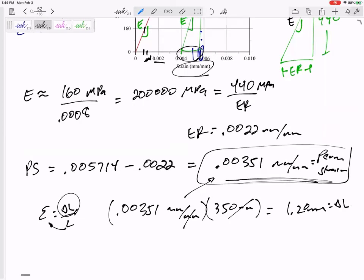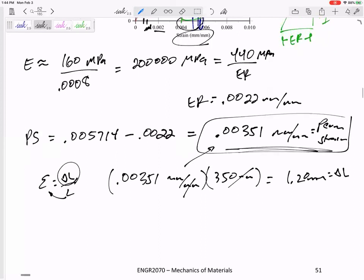That's still not exactly what it asked for. It didn't ask for the change in length or the permanent deformation. It asked for the actual length. So my answer is 350, but plus that permanent deformation of 1.2, so 351.2 is the length. So do you see how, if that's what I'm looking for and you box in 1.20 millimeters, that won't be completely correct.